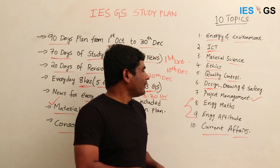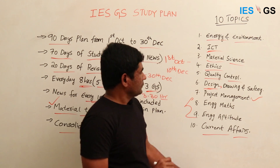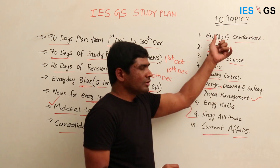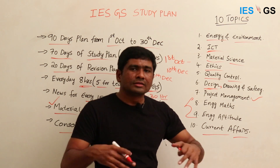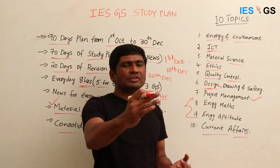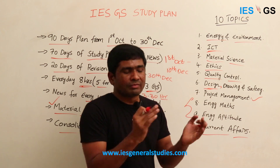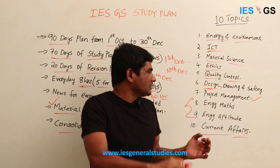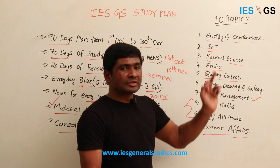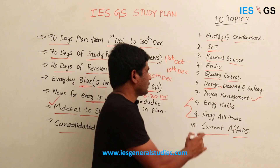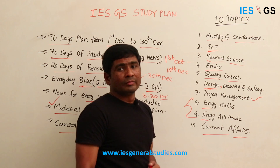Engineering mathematics and engineering aptitude are not covered on our website this year, so follow whatever material you are already using. These topics are placed at the end of the plan because the mark distribution is only around five to fifteen percent. Studying two other topics in two weeks is more efficient than spending two weeks on mathematics alone.